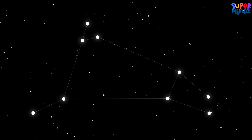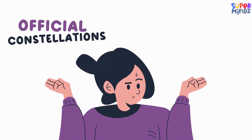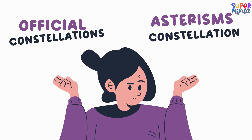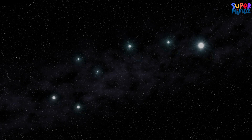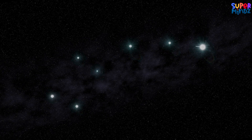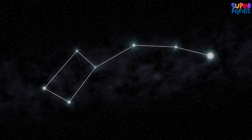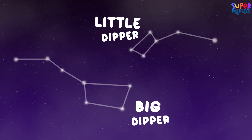There are two main types of constellations: official constellations and asterisms. Asterisms are small groups of stars that form a recognizable shape, but they're not officially recognized as constellations. Famous examples are the Big Dipper and the Little Dipper.